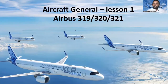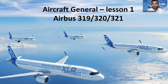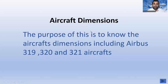Today is the first lesson and we are going to learn about Aircraft General. Under Aircraft General, Lesson 1 covers the A319, A320, and A321 aircraft dimensions. The purpose is to understand the aircraft dimensions for all three Airbus types.